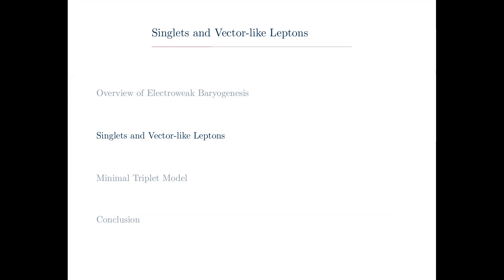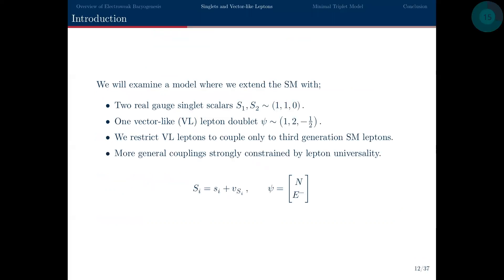Now I'll talk about specific models. The first features singlets and vector-like leptons. We introduce two new real gauge singlet scalars that couple to the standard model Higgs to generate the first-order phase transition, plus an additional vector-like lepton doublet transforming the same way as the standard model left-handed lepton doublets. These couple to the standard model Higgs, the new scalars, and the standard model lepton doublets. We restrict ourselves to scenarios where the vector-like leptons couple only to third-generation standard model leptons, as more general couplings are strongly constrained by lepton universality — a simplifying assumption to reduce the number of parameters.